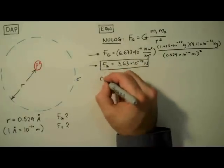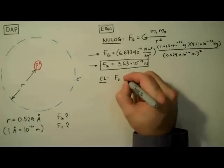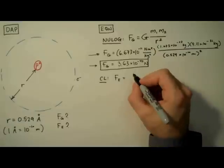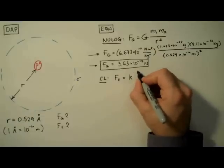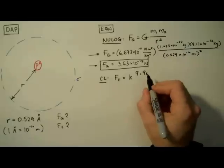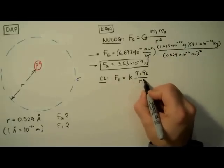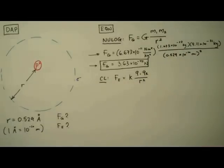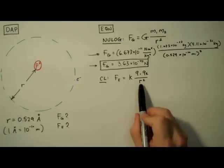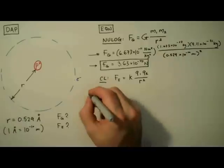And next we'll use Coulomb's law to determine the electric force between the two particles. Coulomb's law states that the electric force is equal to k, Coulomb's constant, times q1, the charge on body 1, times q2, the charge on body 2, divided by r squared, the radial distance between those two bodies. Again, we have a factor of r squared in the denominator, which indicates that Coulomb's law is an inverse square law, just like Nulag.